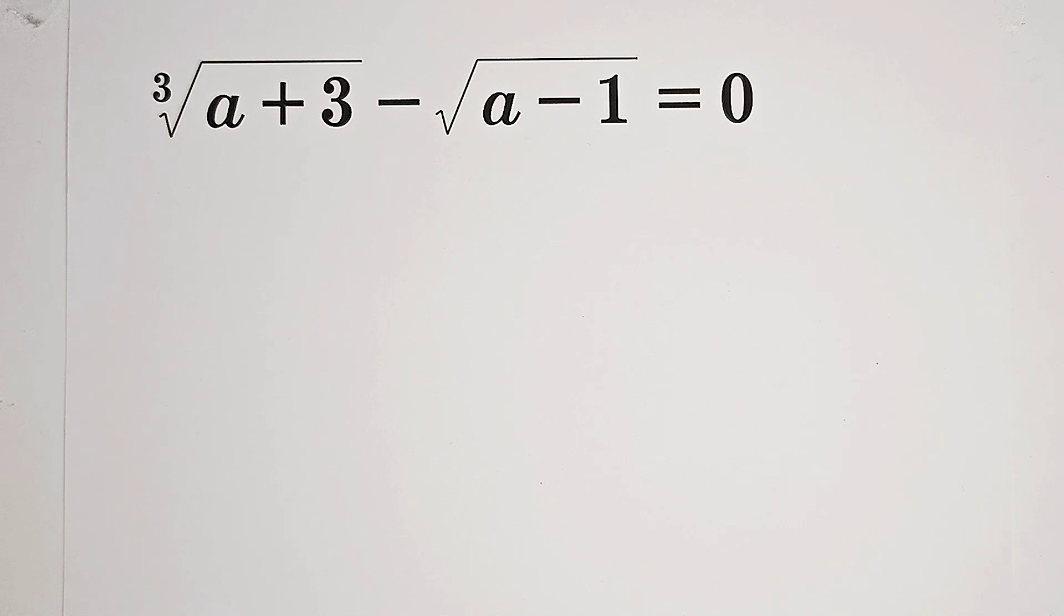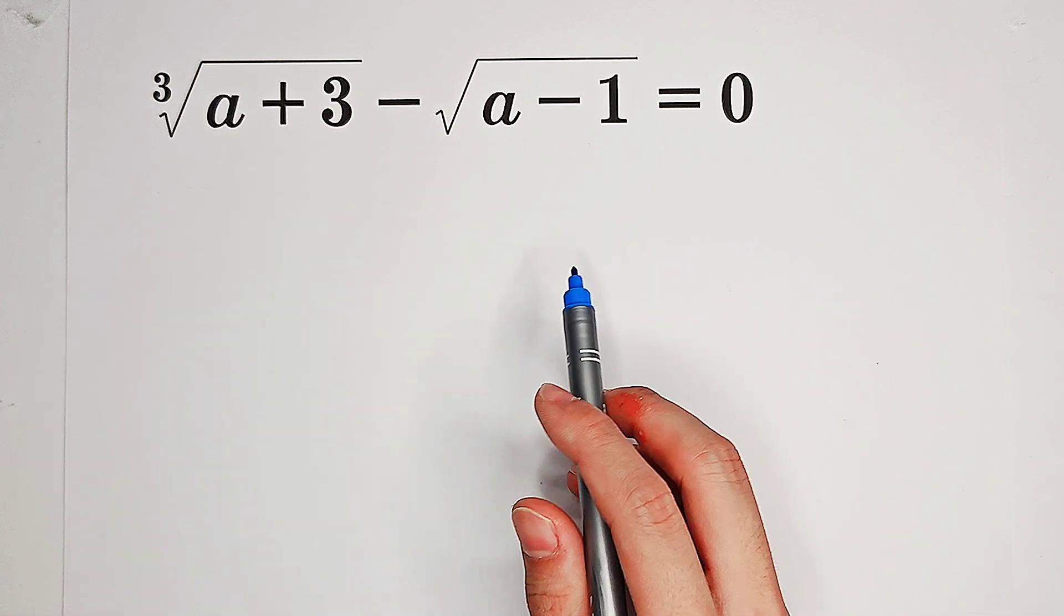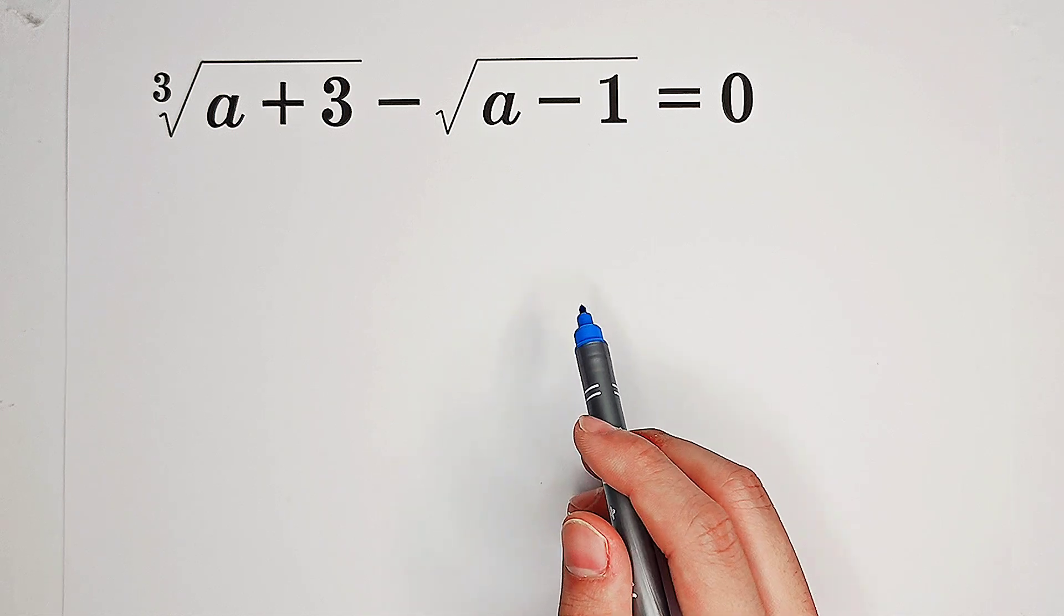Solve for a such that the cube root of a plus 3 minus square root of a minus 1 equals 0.